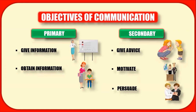The next secondary objective is to persuade, which means to convince the other person to accept your viewpoint. For example, when we go to a shop to buy a product, the shopkeeper not only gives us information about the product but also shows us its utility, provides customer feedback, and sometimes offers discounts. The shopkeeper may also create urgency by saying the price might increase within a couple of days, prompting us to place an order immediately.